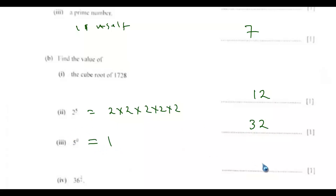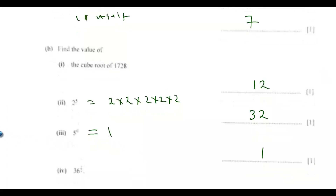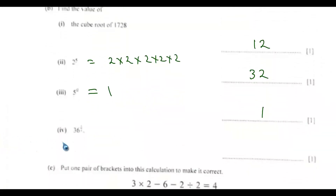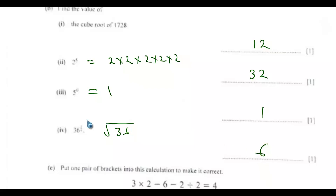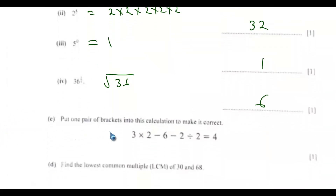This equals 1, and this is a fractional index — that's another topic under indices. The square root of 36 gives you 6, so the answer is 6.